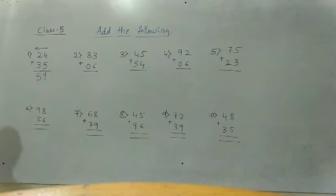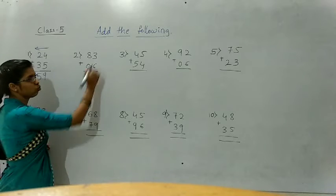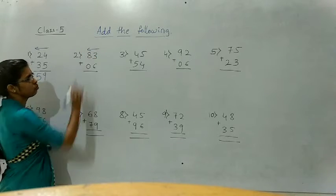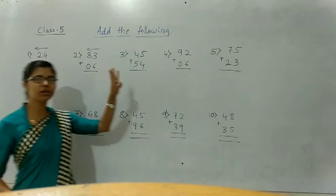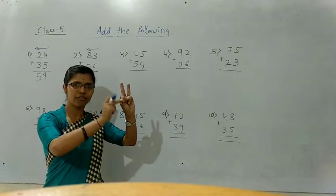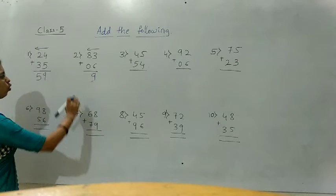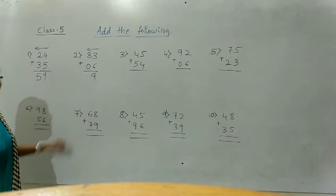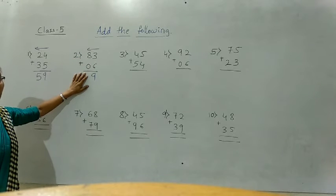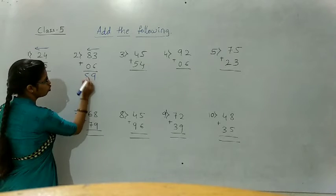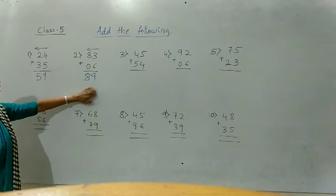Come to the next question. We should first add the ones place — don't add the tens first. The above number is 3, the below number is 6. After 6: seven, eight, nine. How much? 9. In the previous we learned 8 plus 0 — the answer is 8, not 0. So if we add 83 plus 6, what will we get? 89.